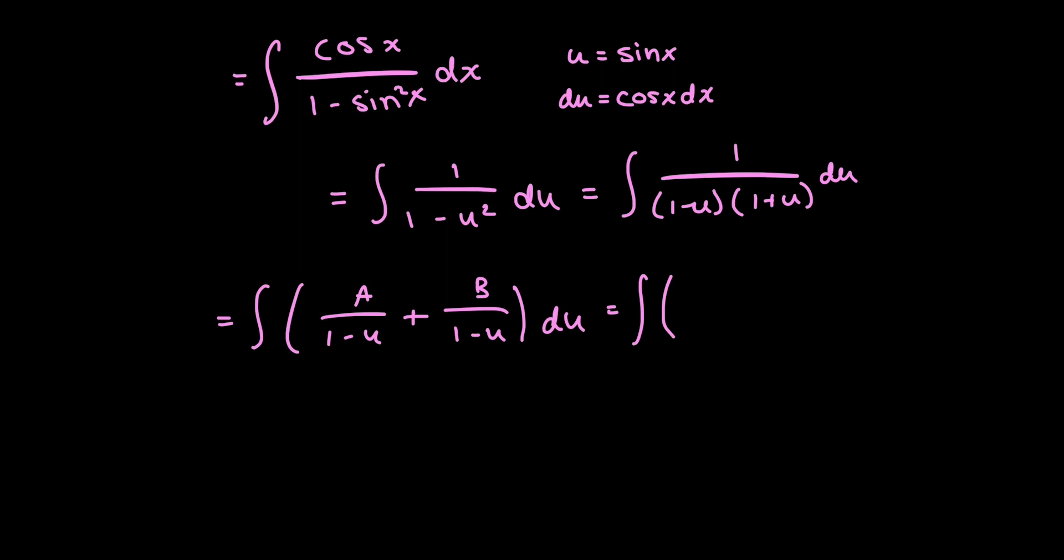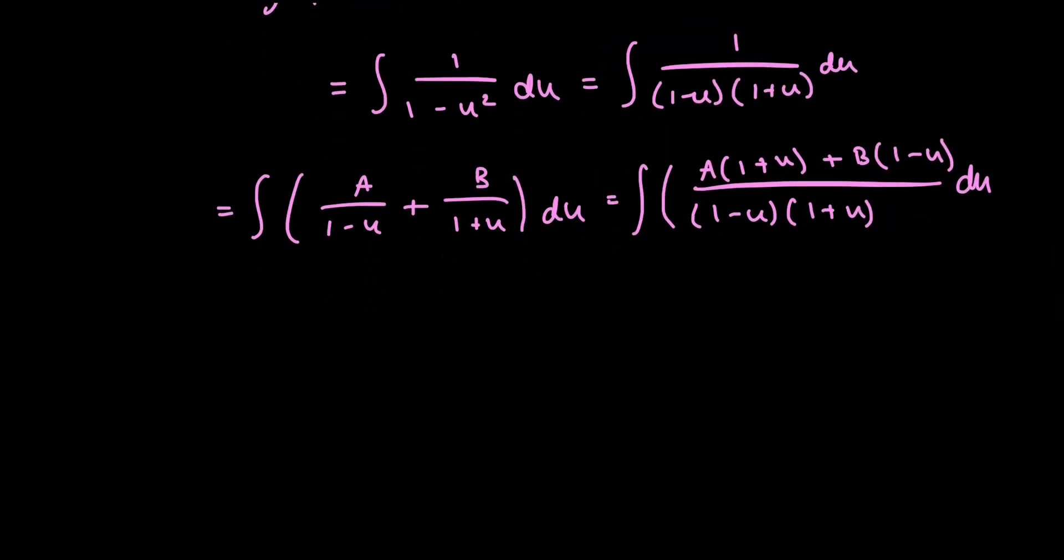So I have a times 1 plus u plus b times 1 minus u over the original denominator that I had, which is 1 minus u times 1 plus u. And now all I have to do is match my new numerator to my old numerator. So distributing my a's and b's, I have a plus a u plus b minus b u is all equal to 1.